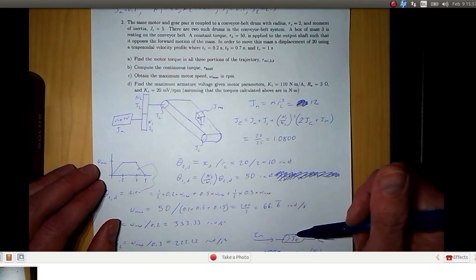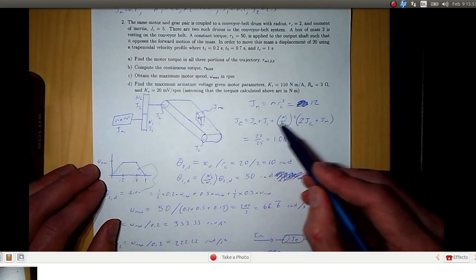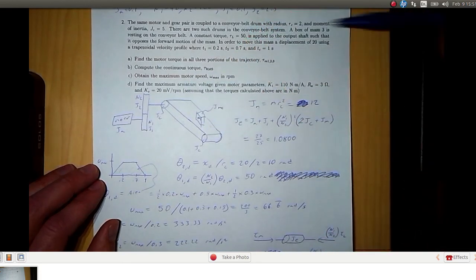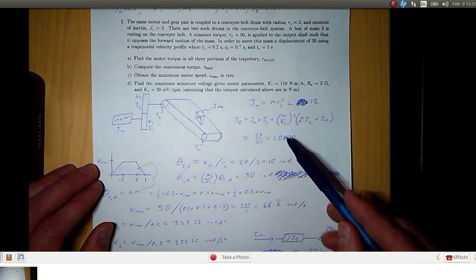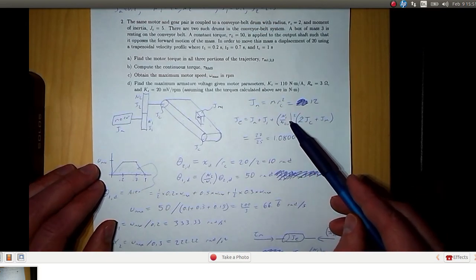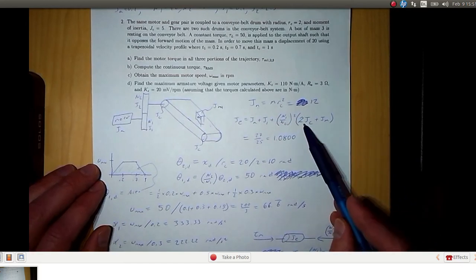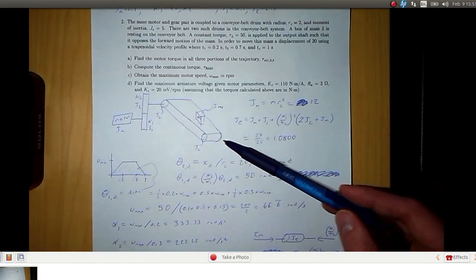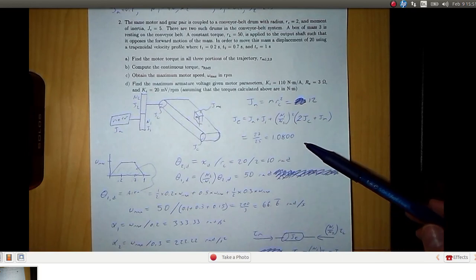And then the equivalent moment of inertia that the motor sees is just j_a plus j_1 plus the reflected moments of inertia from this drum, this drum, and the mass. So that's n_1 over n_2 squared, so the number of teeth on the destination shaft divided by the number of teeth on the source shaft, that quotient squared, and then the moments of inertia on the source shaft, which is 2 times j_c plus j_n. And that works out to be 1.08.